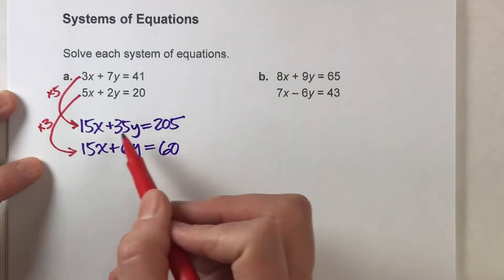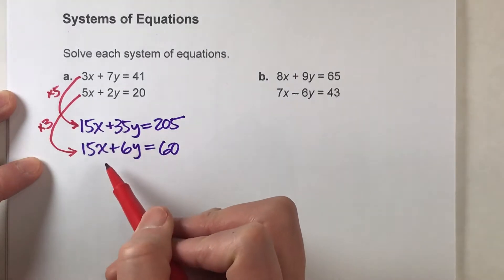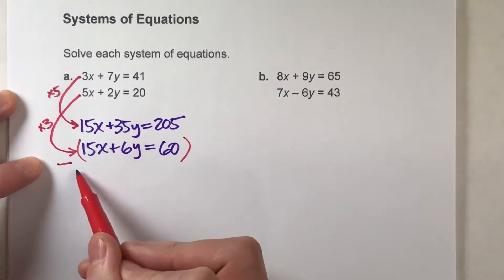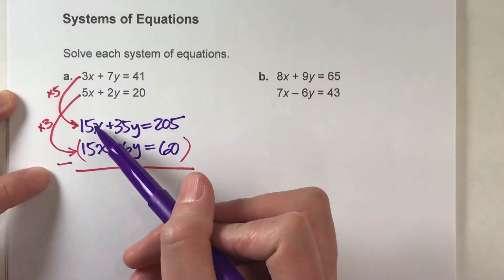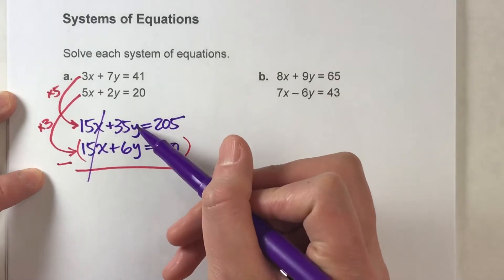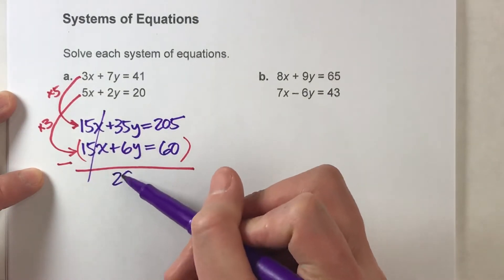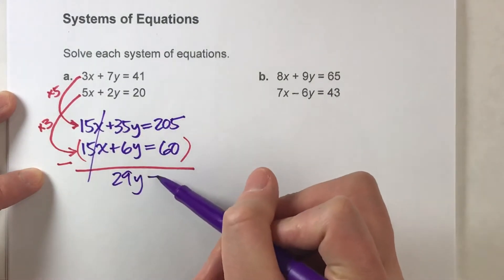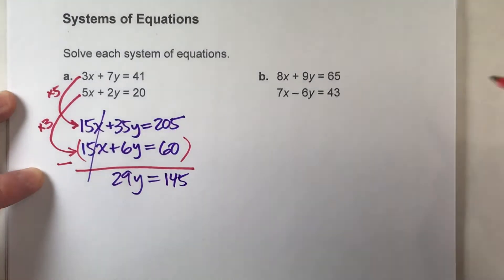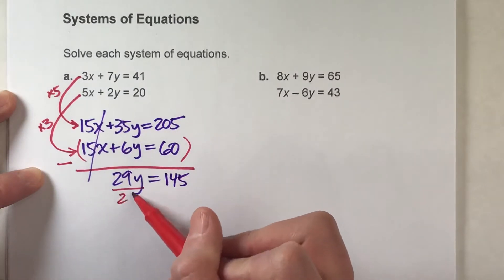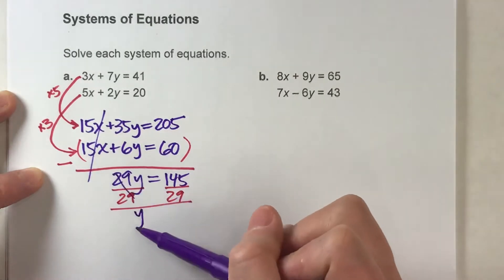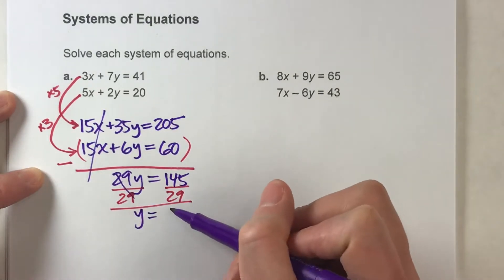Let's go ahead and solve this now. I've got 15x here, 15x here, so I'm going to have to subtract the two equations in order to eliminate the x's because 15x minus 15x leaves me with no x's. 35y minus 6y is 29y, and 205 minus 60 is 145. To get y, I'm going to divide both sides by 29, and I end up getting y equals 5.